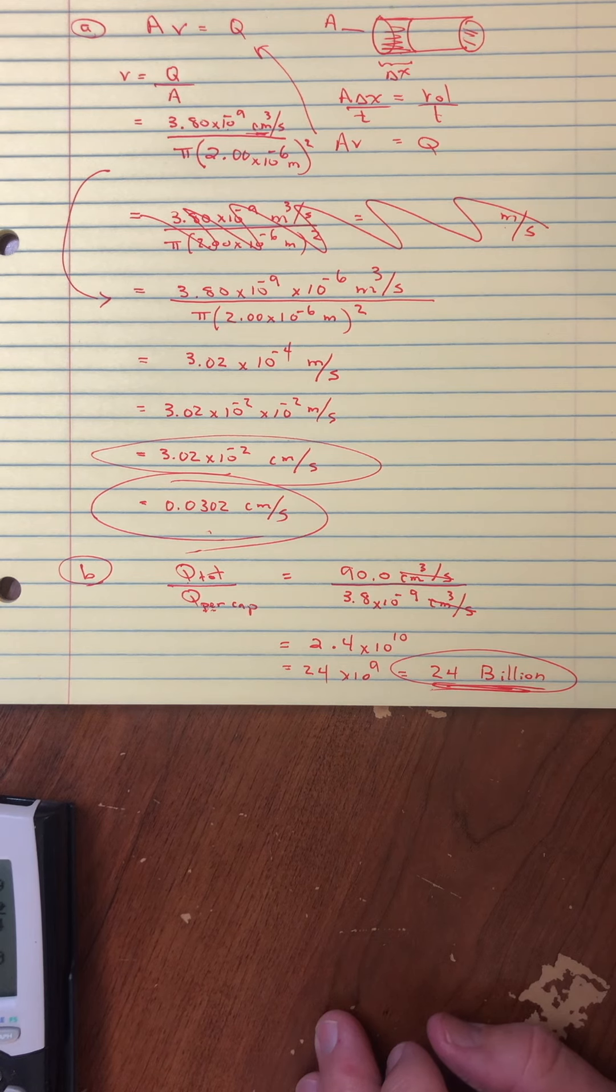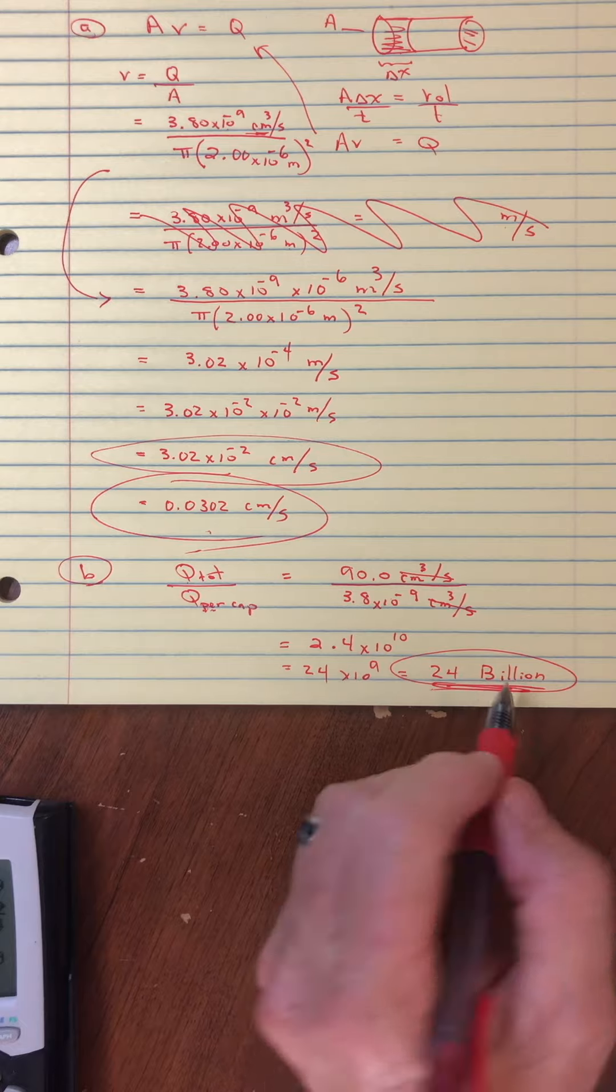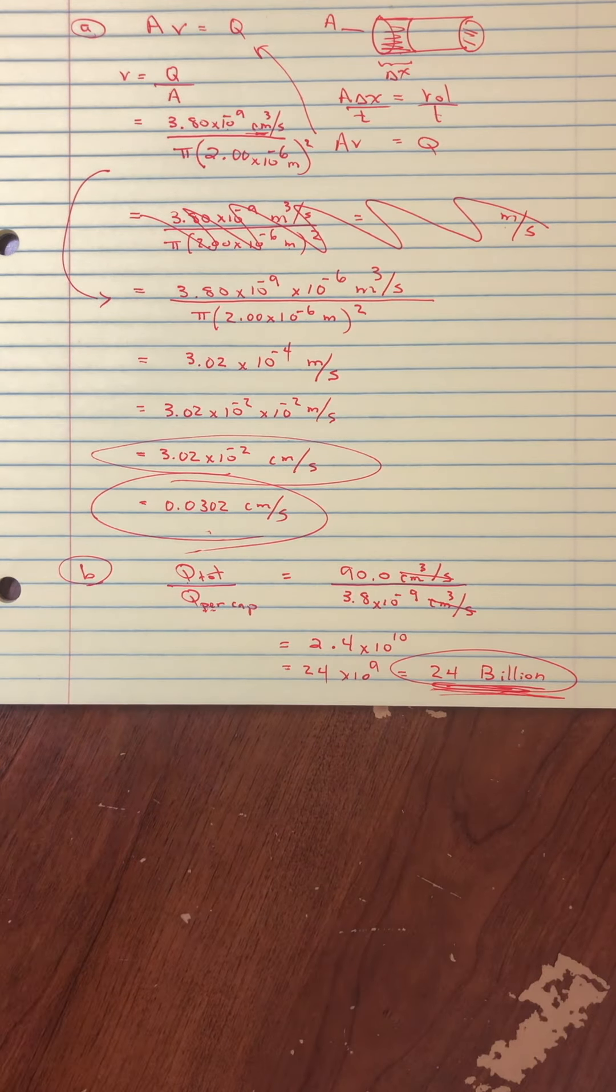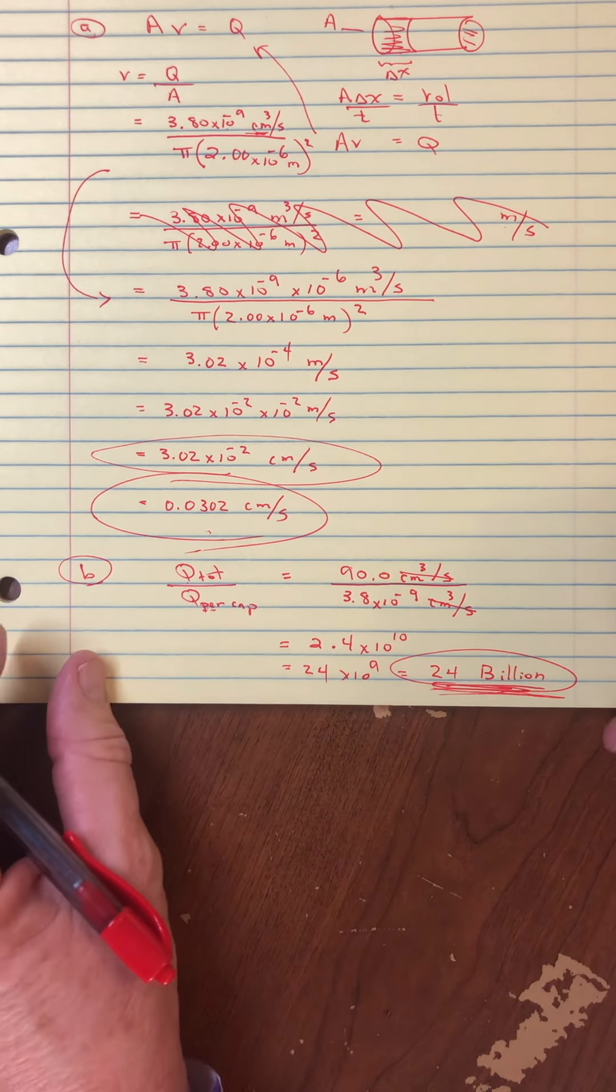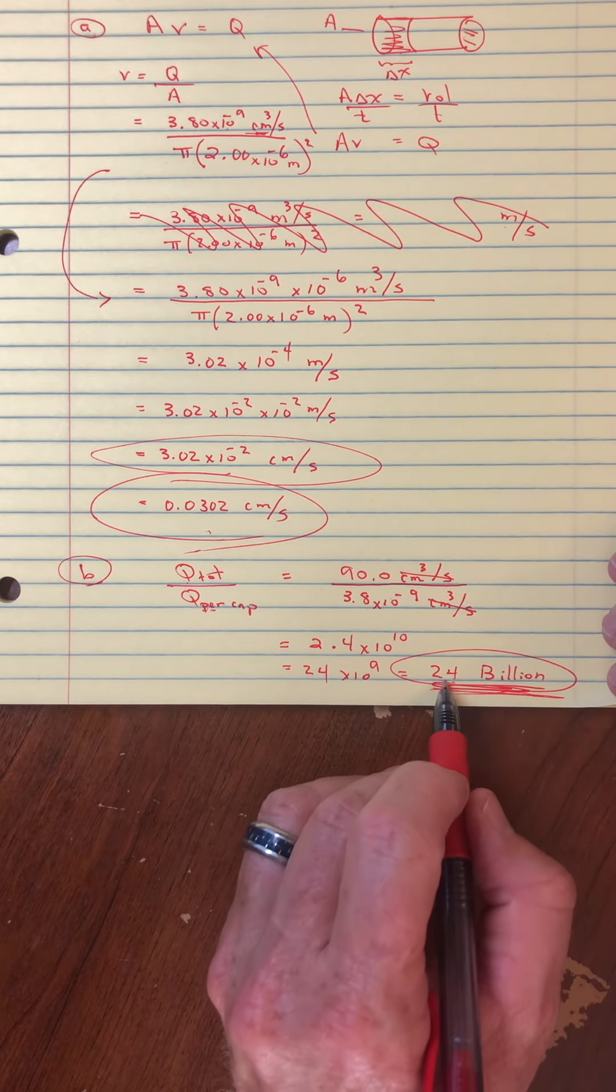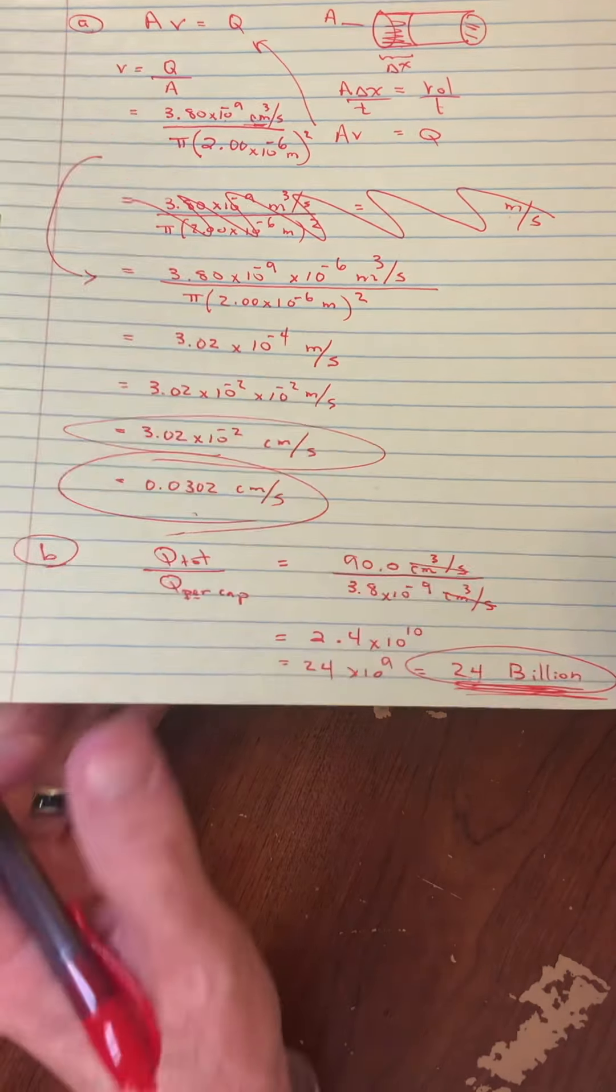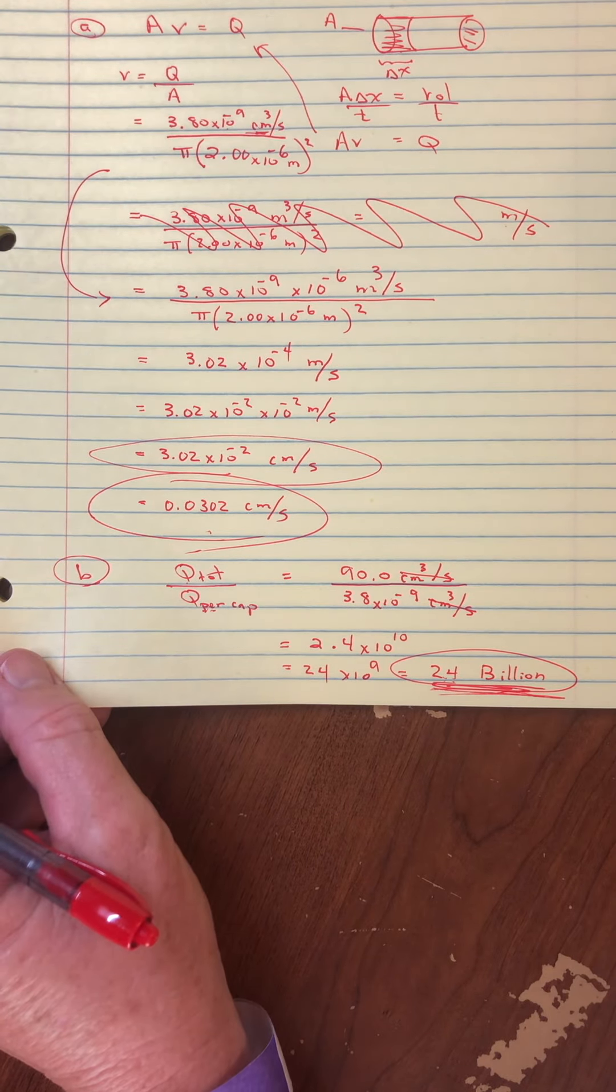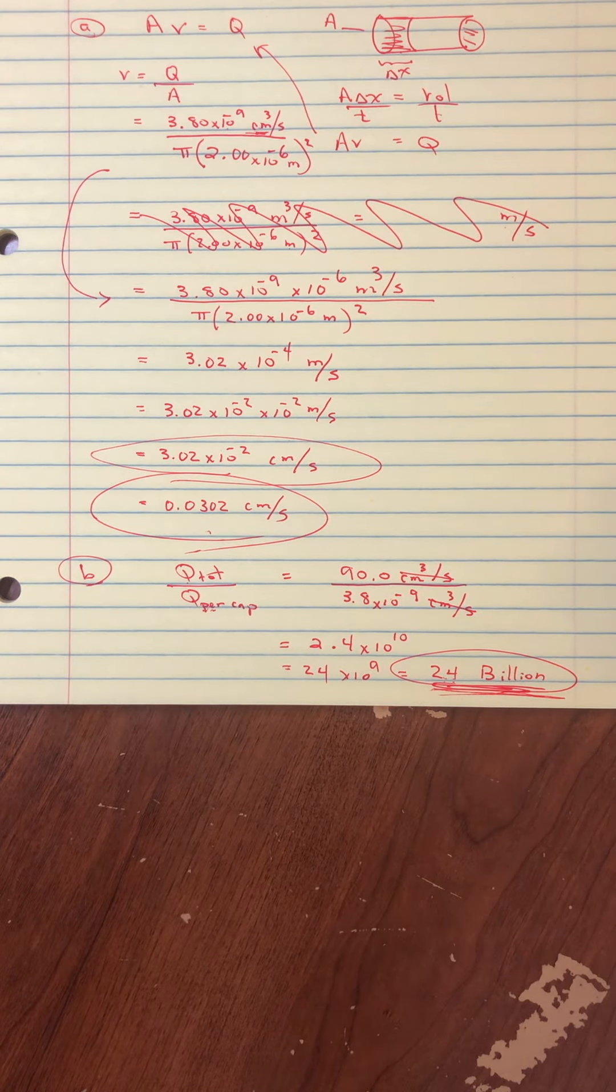2.4 times 10 to the 9. That's a billion. So 24 billion capillaries. And what did it say here? The large number obtained is an overestimation, but still reasonable. Okay. So they say so. 24 billion capillaries in my body. Even if it's kind of an overestimate, we're probably still looking at 2.4 billion. Wow. Okay. Well, there's the flow rate. Hopefully that one helps.